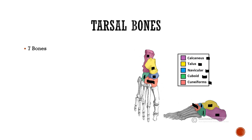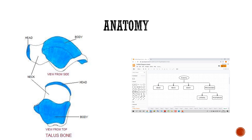Today's topic is on the talus bone — this part shaded in yellow. Coming to the anatomy of the talus bone, the talus consists of five parts: head, neck, body, and two processes — the lateral process and the posterior process.